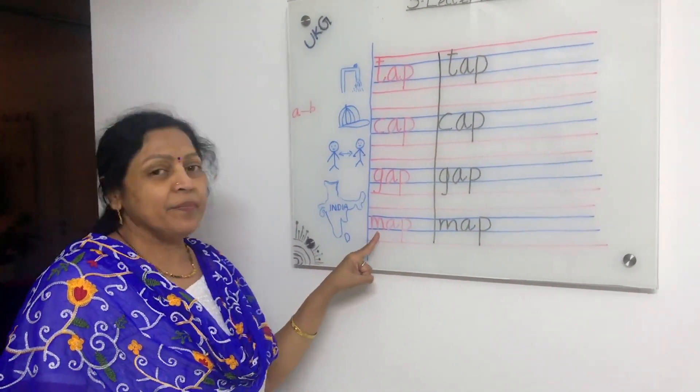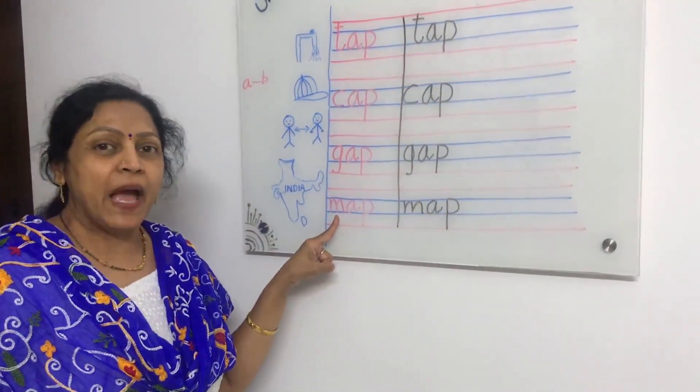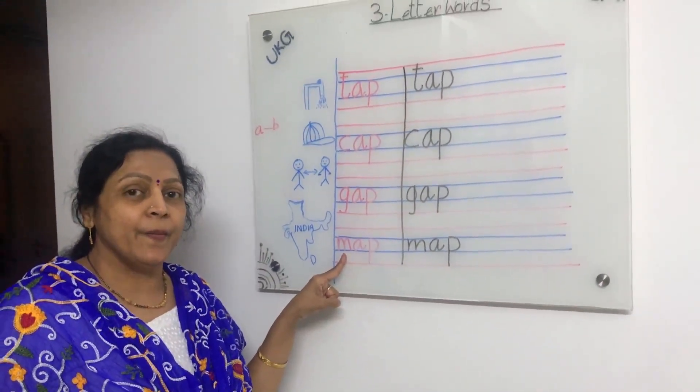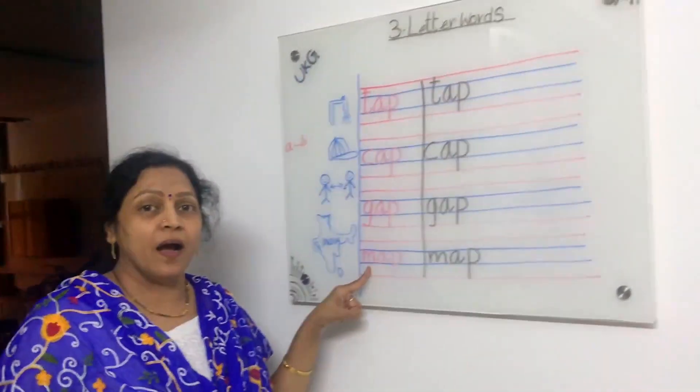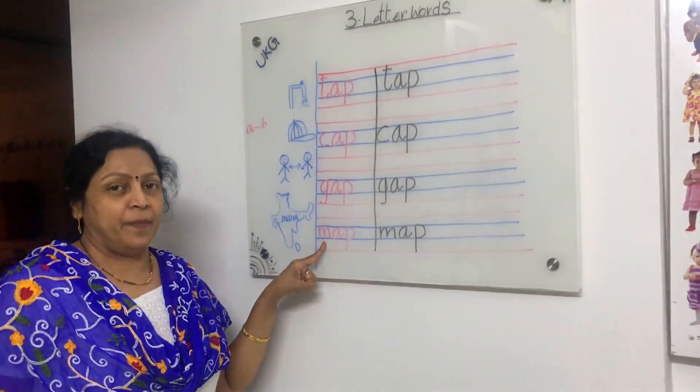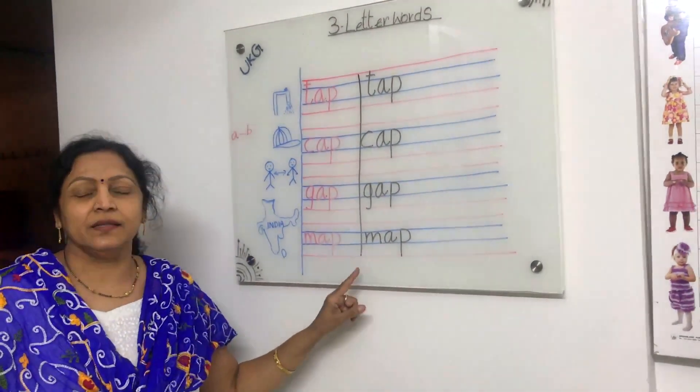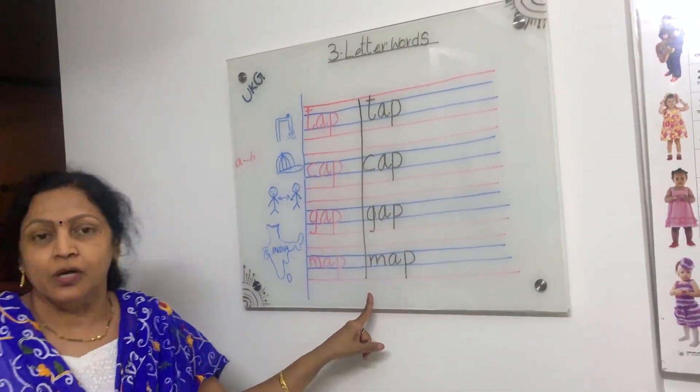M, A, P, map. M, A, P, map. These are the three letter words. Now, I will show you one thing.